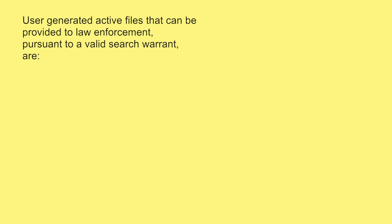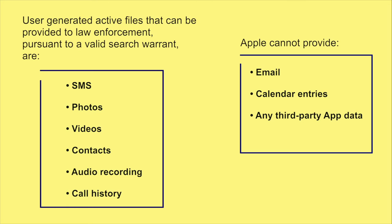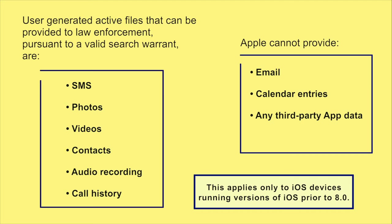Please note that only categories of user-generated active files that can be provided to law enforcement pursuant to a valid search warrant are SMS, photos, videos, contacts, audio recordings and call history. Apple cannot provide email, calendar entries or any third-party app data. The above information applies only to iOS devices running versions of iOS prior to 8.0.